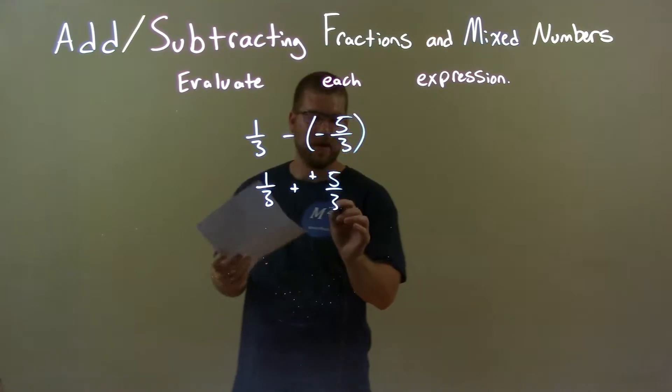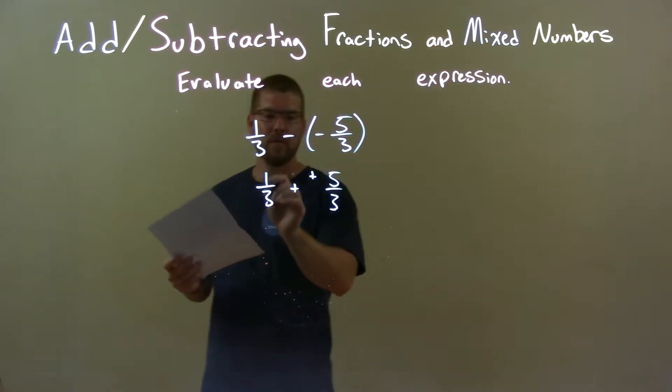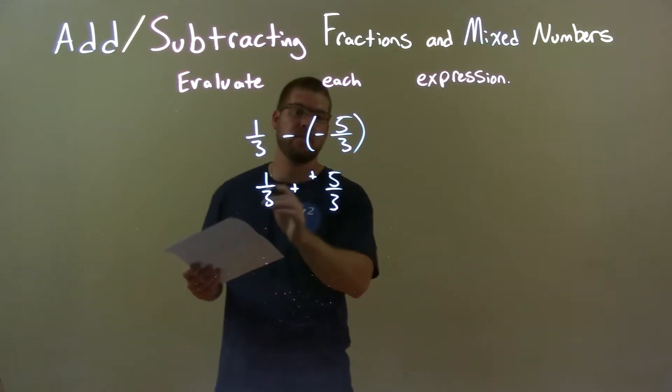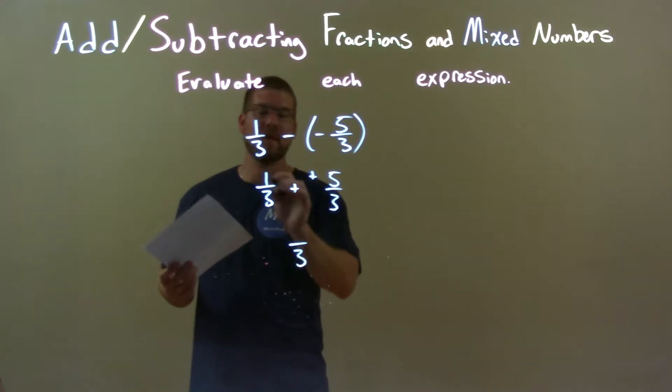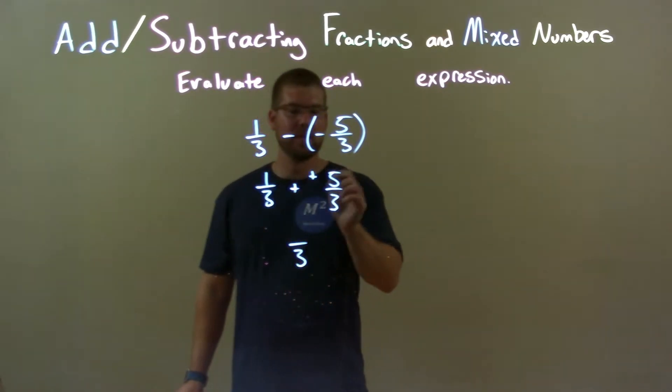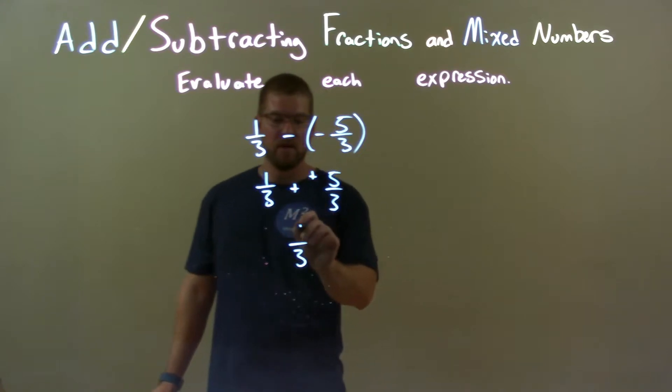Now that they have the same base here, since one-third and five-thirds have the same base of three, we can keep that base there and we just have to add the numerators. Well, one plus five is six, so we have six-thirds.